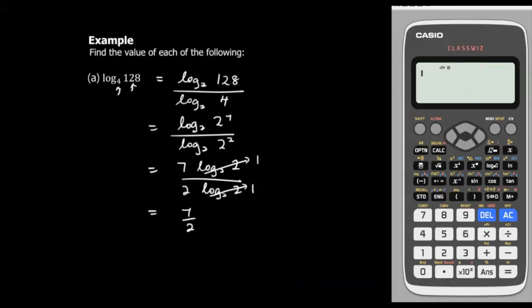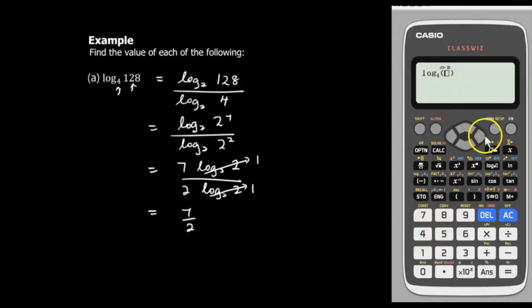Now I'll show you how to get your answer using the Casio Classwiz calculator. Go to the log button, key in base 4, then go to the right and key in 128, then press equals. You get 7 over 2, so your answer is correct.